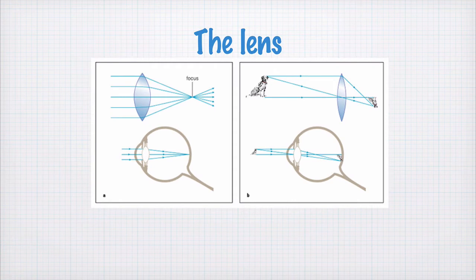So these images here show you essentially what is happening in your eye. This is what we call a lens. It's a bit of glass with two curved surfaces. It doesn't have to be two curved surfaces, but it has to have at least one curved surface.